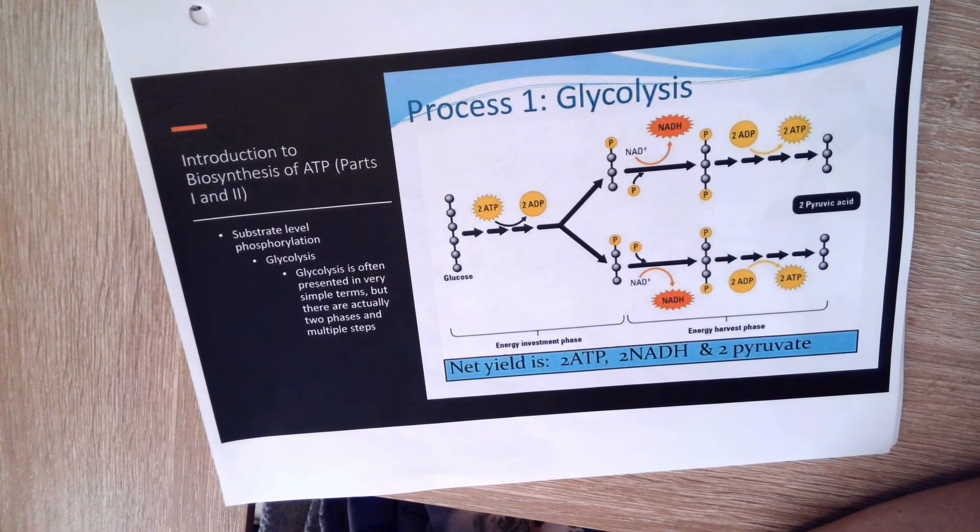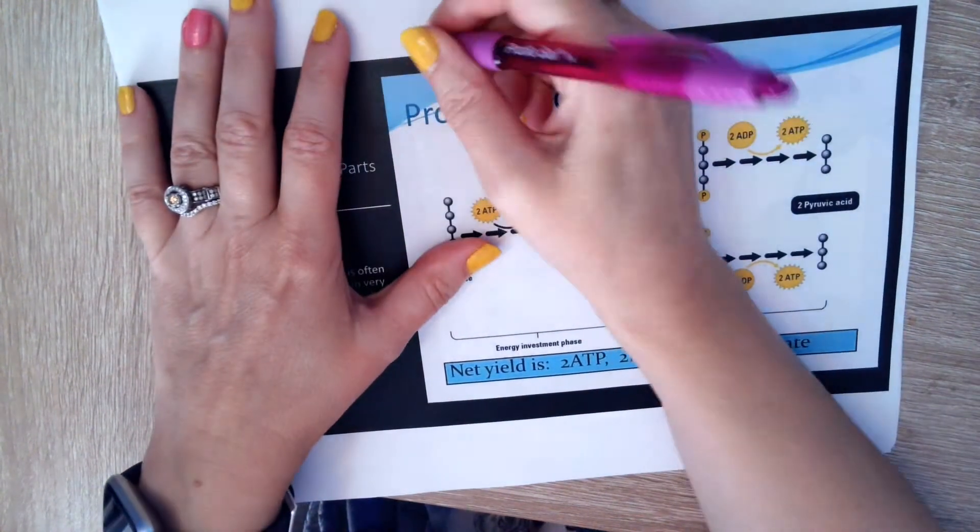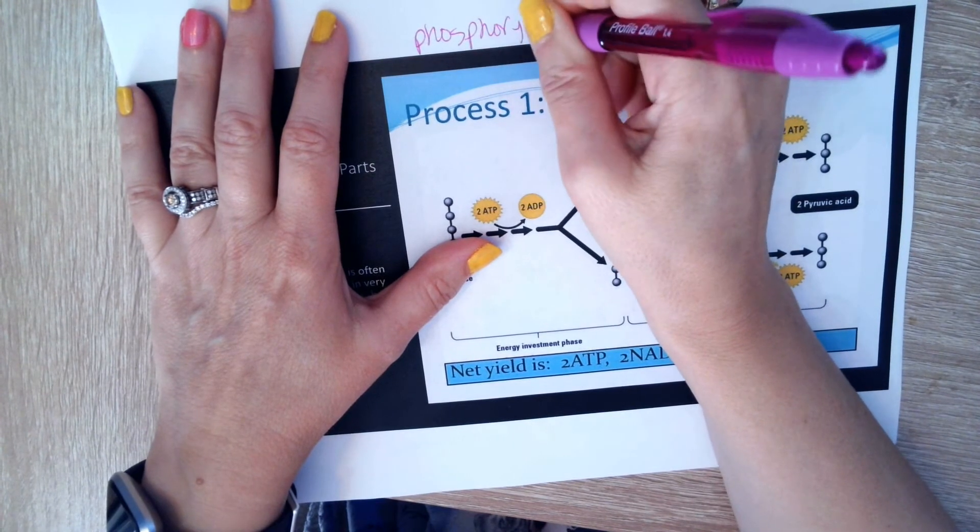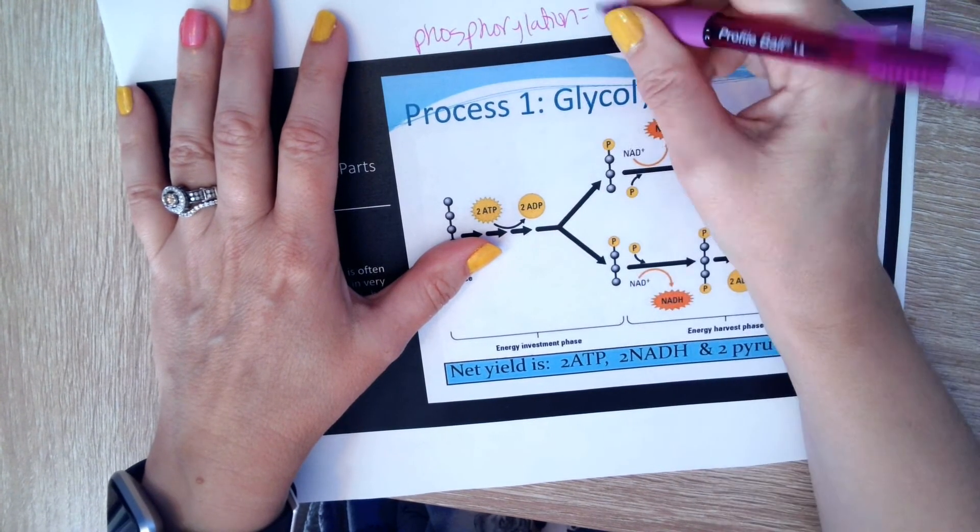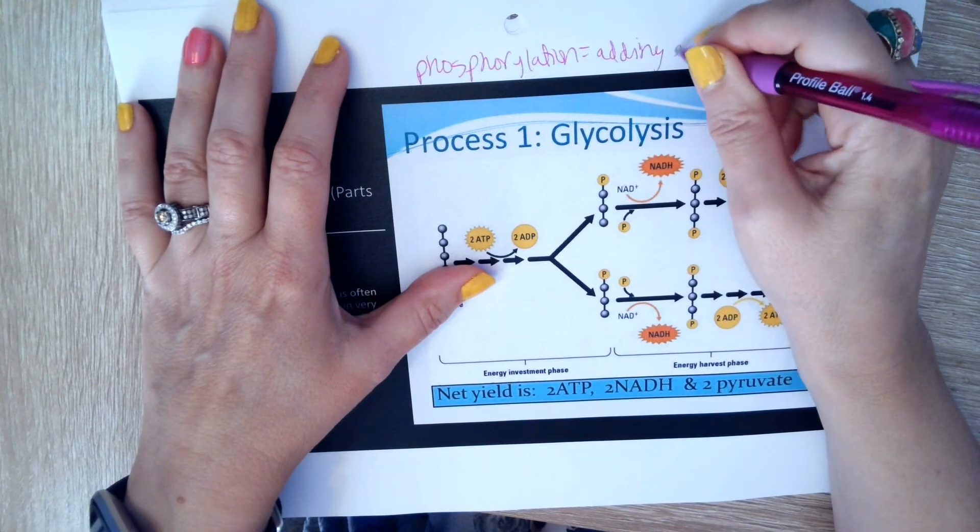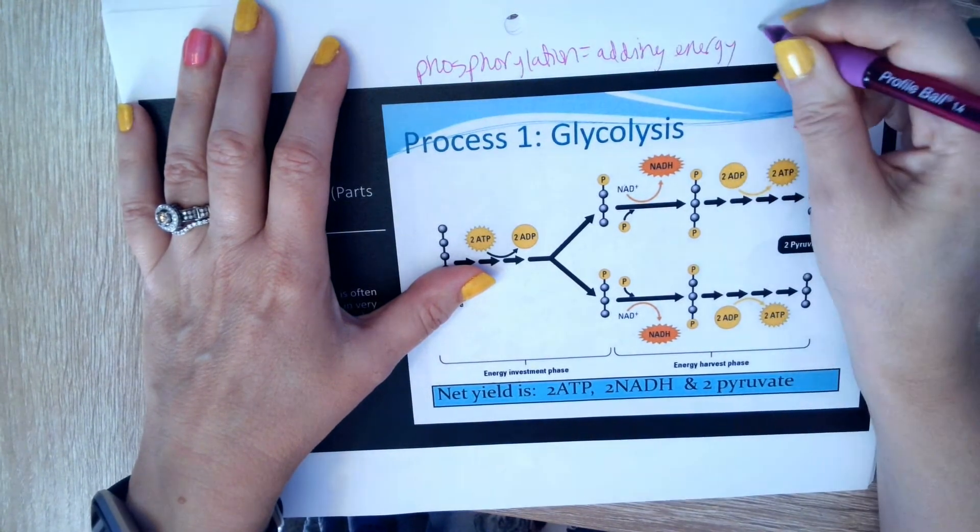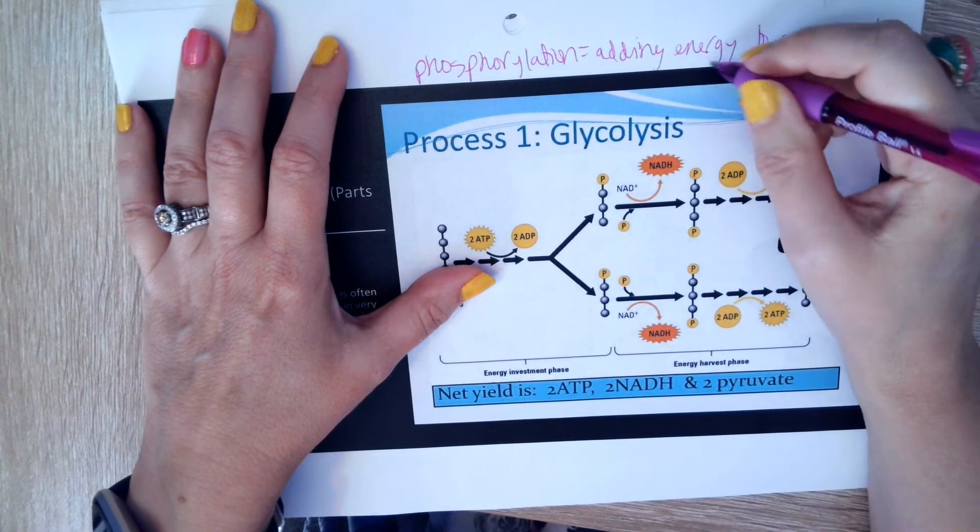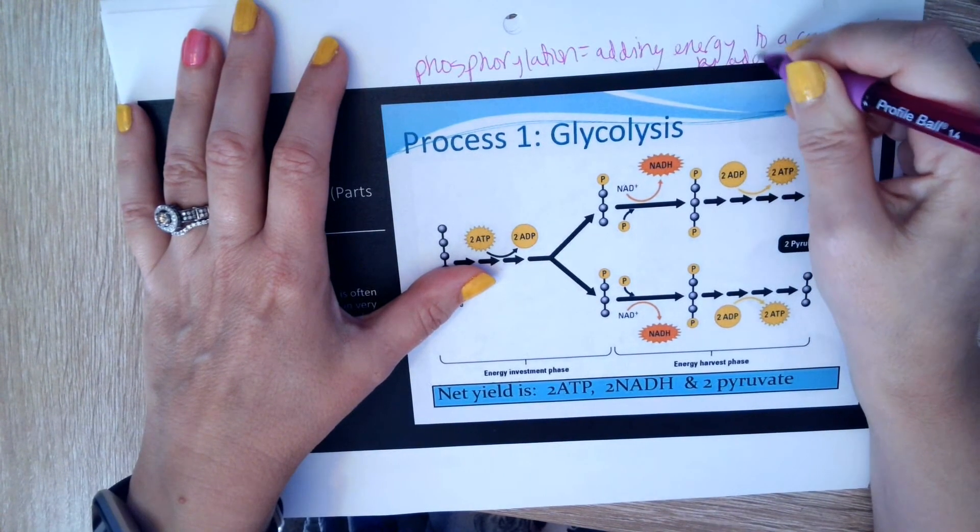So phosphorylation is adding energy to a compound, and we do it by adding phosphate.